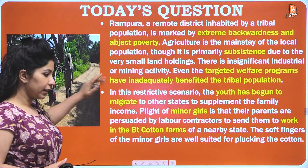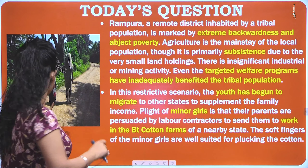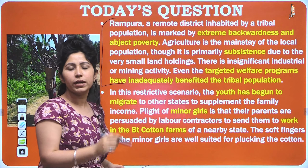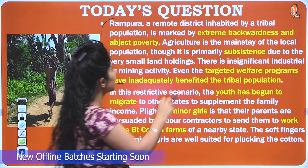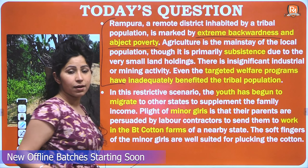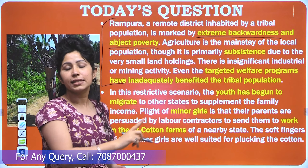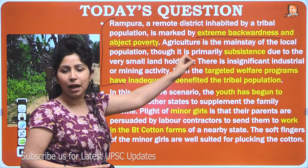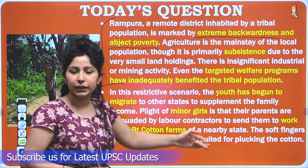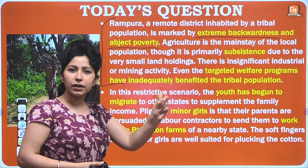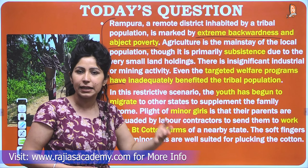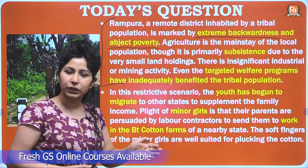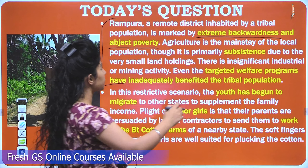Looking at the first paragraph, notice the yellow-highlighted terms. The first is extreme backwardness and abject poverty — the solution must address this by giving employment opportunities, using knowledge about tribal areas, and what government benefits are provided to generate employment and reduce poverty.